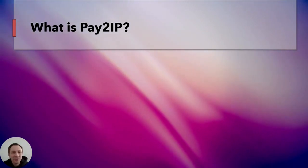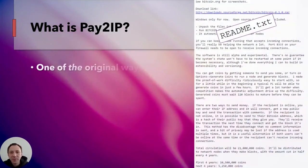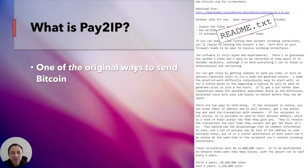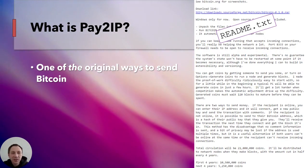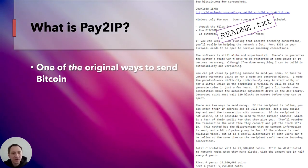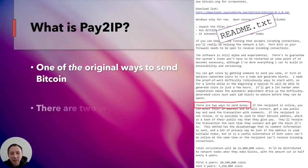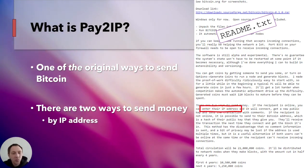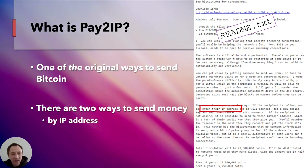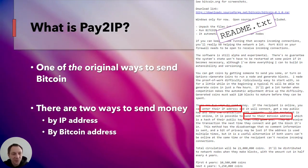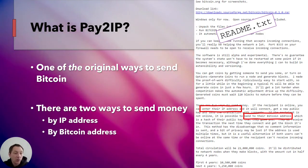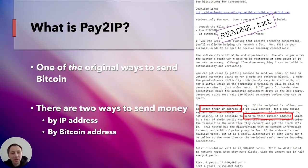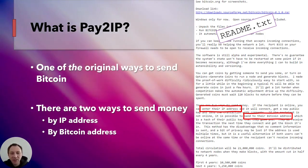First of all, let's dig in and find out what is Pay2IP. It's actually one of the original ways to send Bitcoin. If you looked at the very first release of Bitcoin, there's a readme attached to that. And in this, it talks about two ways to send money on this thing called Bitcoin. One way was to use an IP address, and the other way was to use a Bitcoin address. We're all familiar with sending Bitcoin using Bitcoin addresses, but not everyone is aware that originally you could just use an IP address.